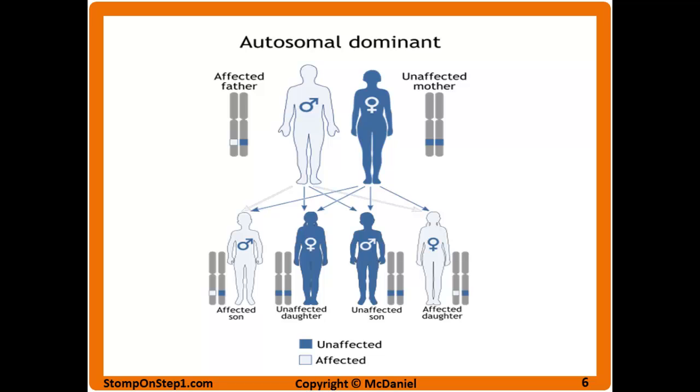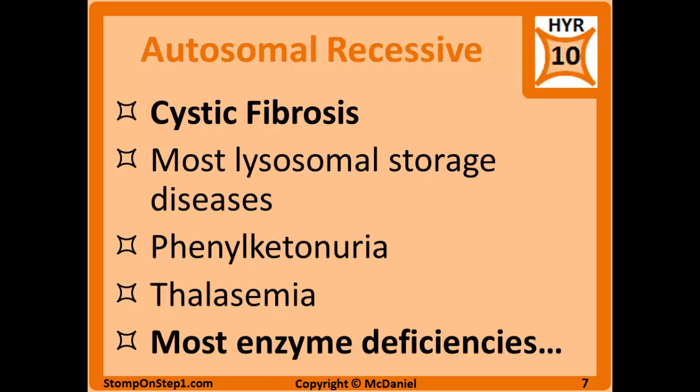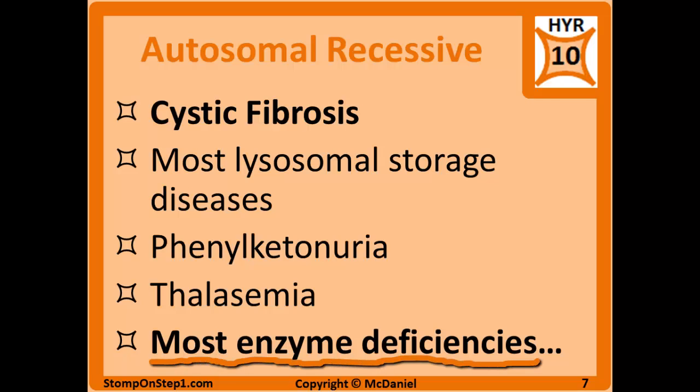Autosomal recessive diseases are the same concept but opposite — diseases inherited on chromosomes other than X and Y that show recessive patterns of inheritance. For whatever reason, they tend to ask more questions about autosomal recessive than autosomal dominant. Cystic fibrosis pops up a lot. Most enzyme deficiencies are also going to be autosomal recessive, as are lysosomal storage diseases, PKU, and thalassemia, among a long list of others.